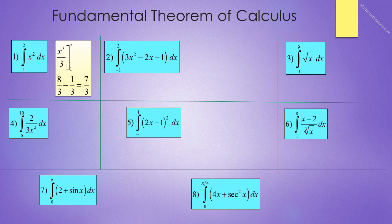We will show nine simple problems in applying the Fundamental Theorem of Calculus. Future videos will tackle more complex ones. The first problem reads the integral from 1 to 2 of x squared dx. We integrate and get x cubed over 3, and use this notation to look at that expression from a lower limit of 1 to an upper limit of 2. We plug the upper limit in first and then subtract the lower limit and get 8 thirds minus 1 third, and our answer is 7 thirds.